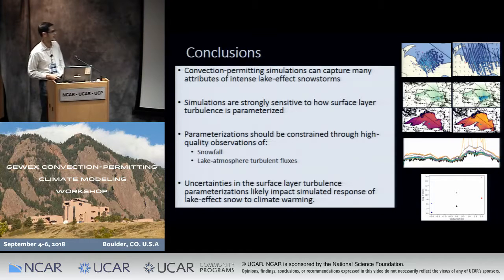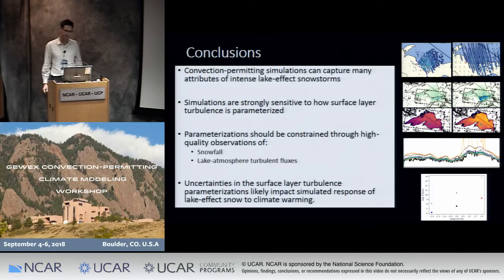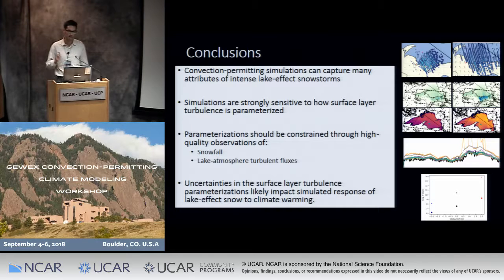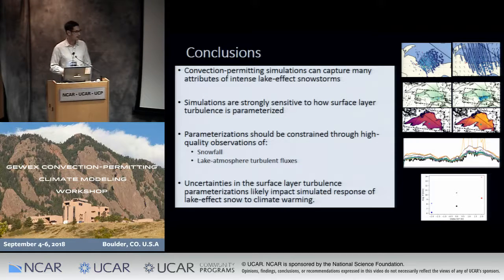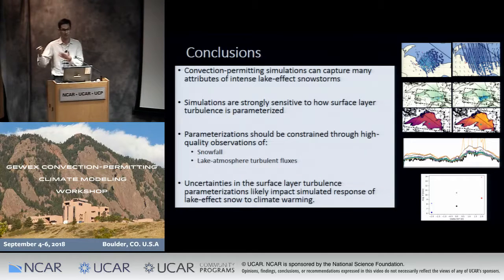In conclusion, convection-permitting simulations can capture many attributes of intense lake effect snowstorms, but the simulations are strongly sensitive to how the surface layer and turbulence are parameterized. These parameterizations should and can be constrained through high-quality observations of snowfall and lake–atmosphere fluxes. These uncertainties are important because they potentially affect the temperature sensitivity of lake effect snow, which will have impacts on regional climate simulation efforts.